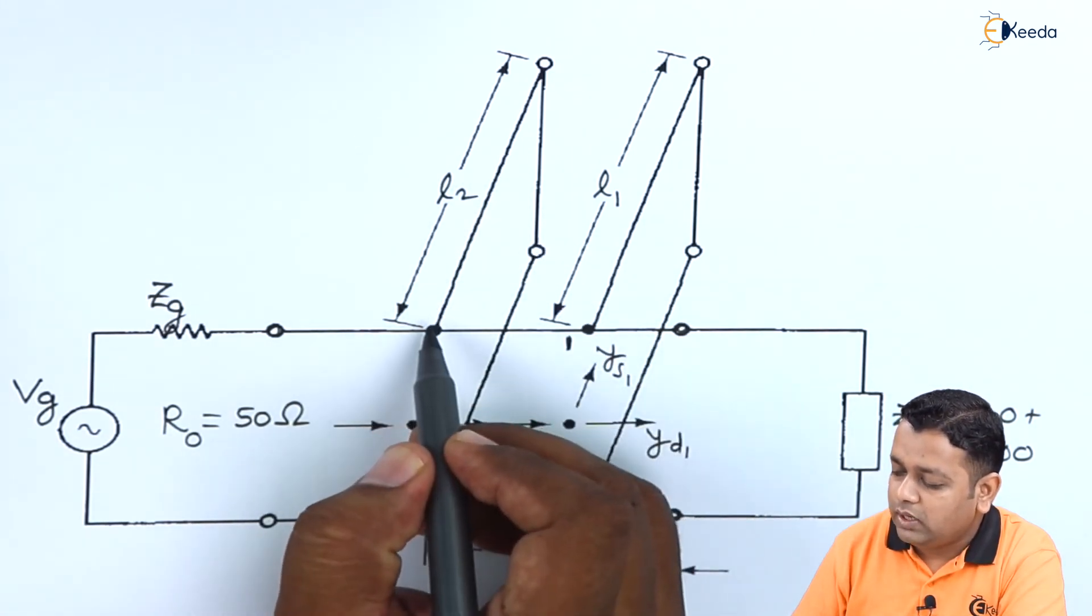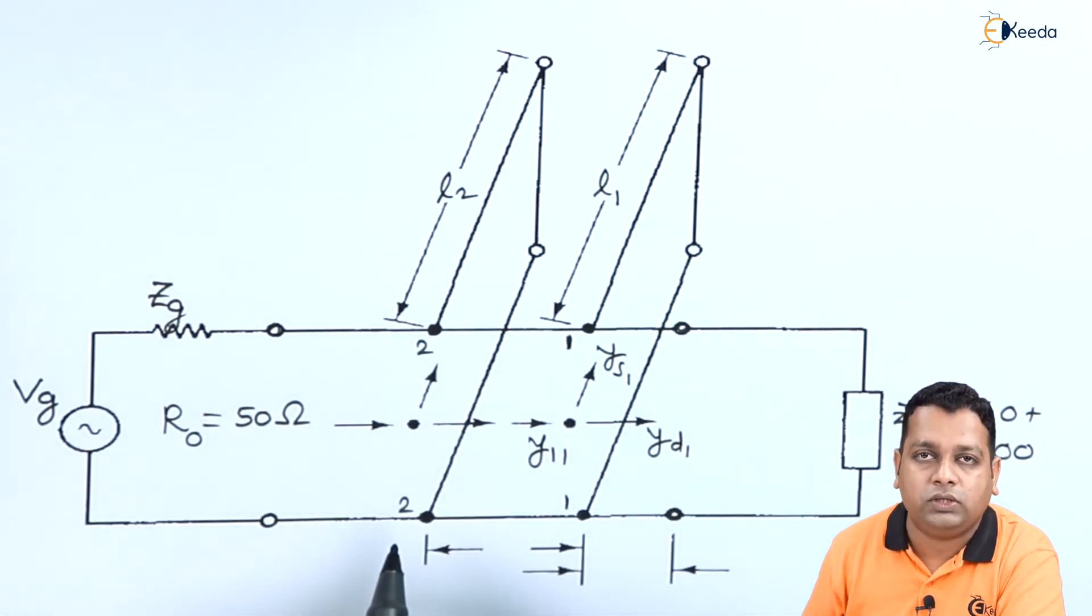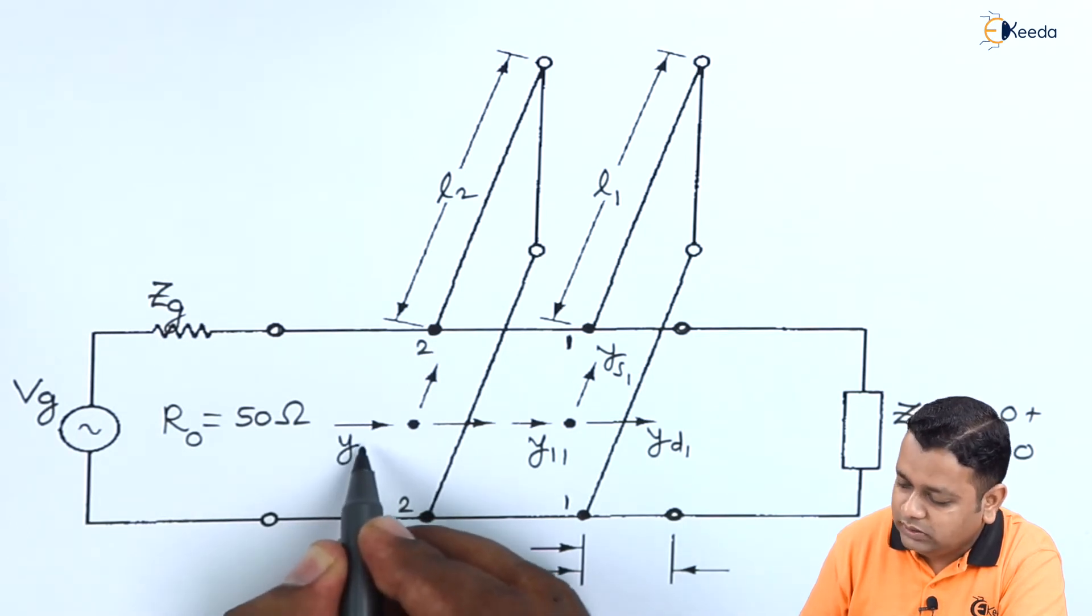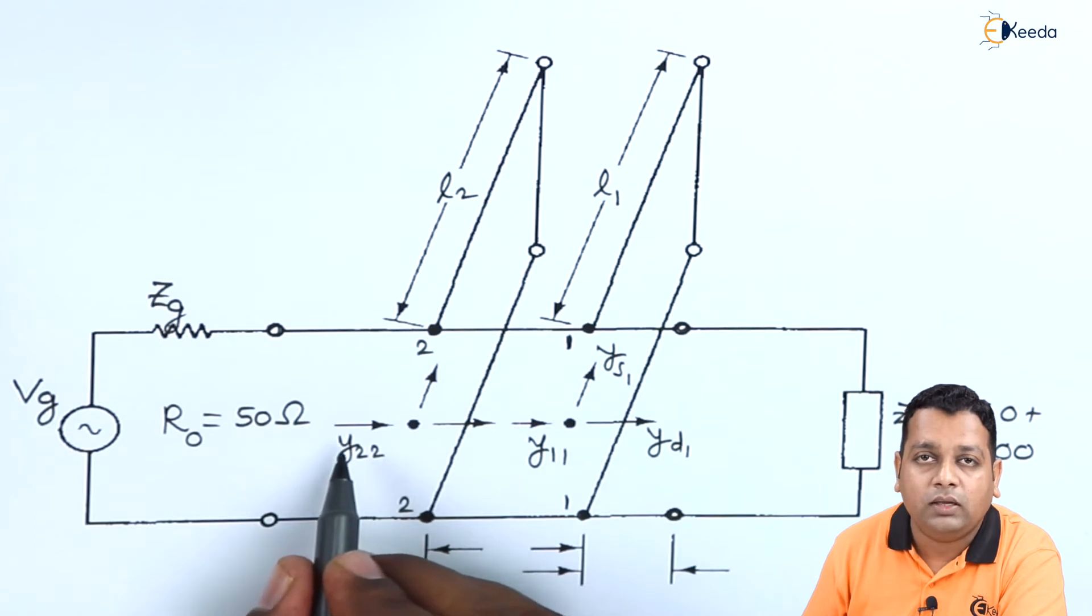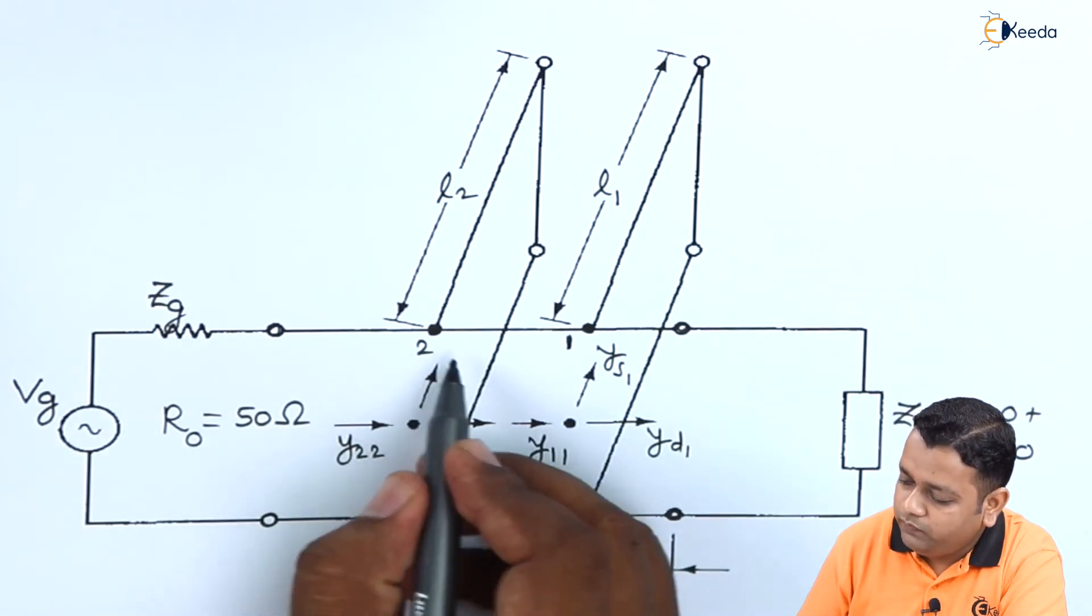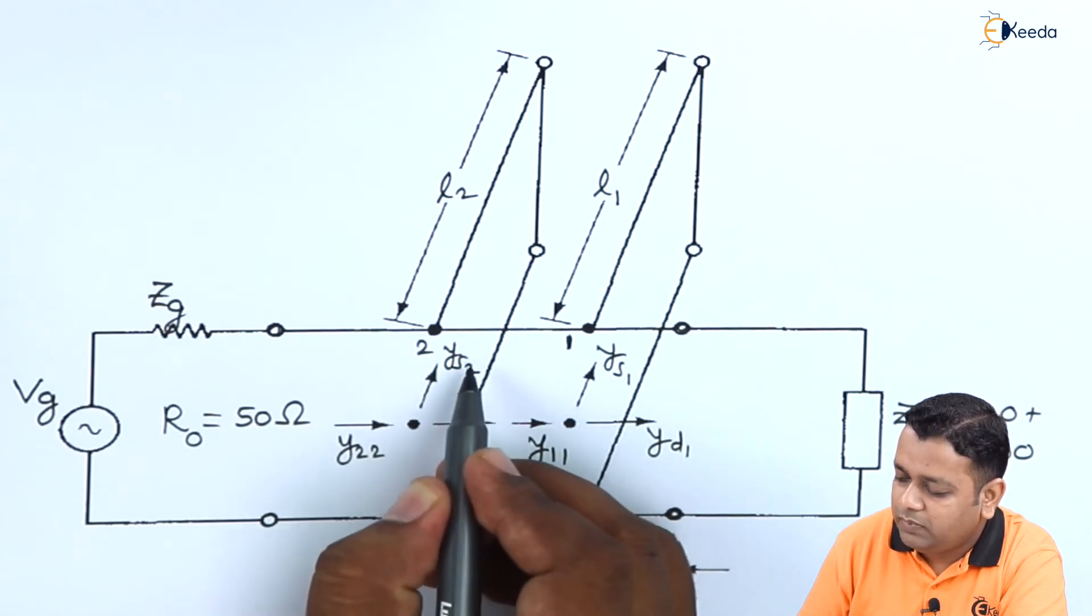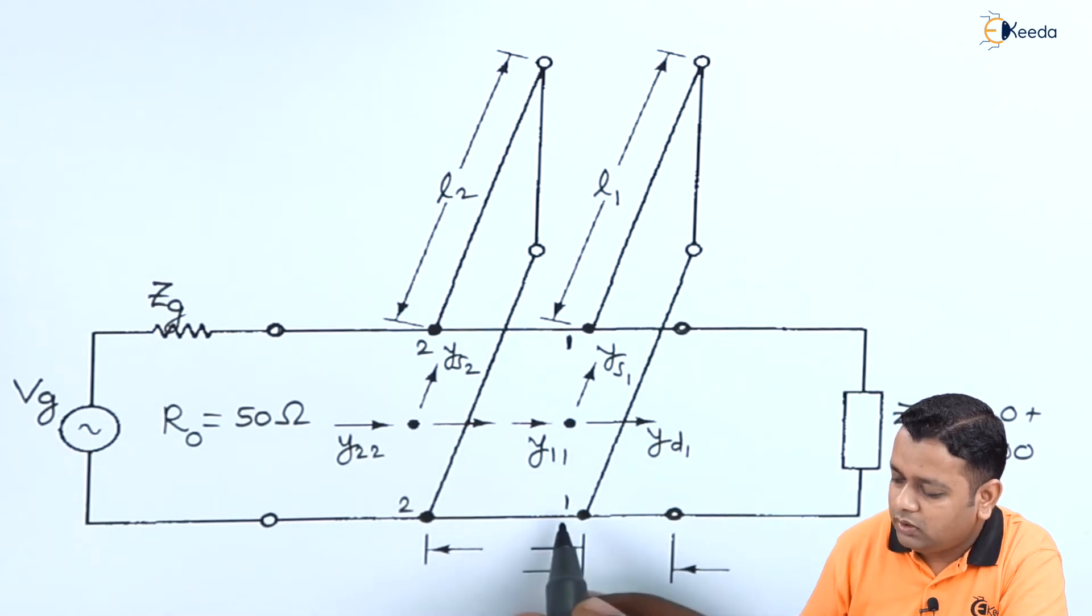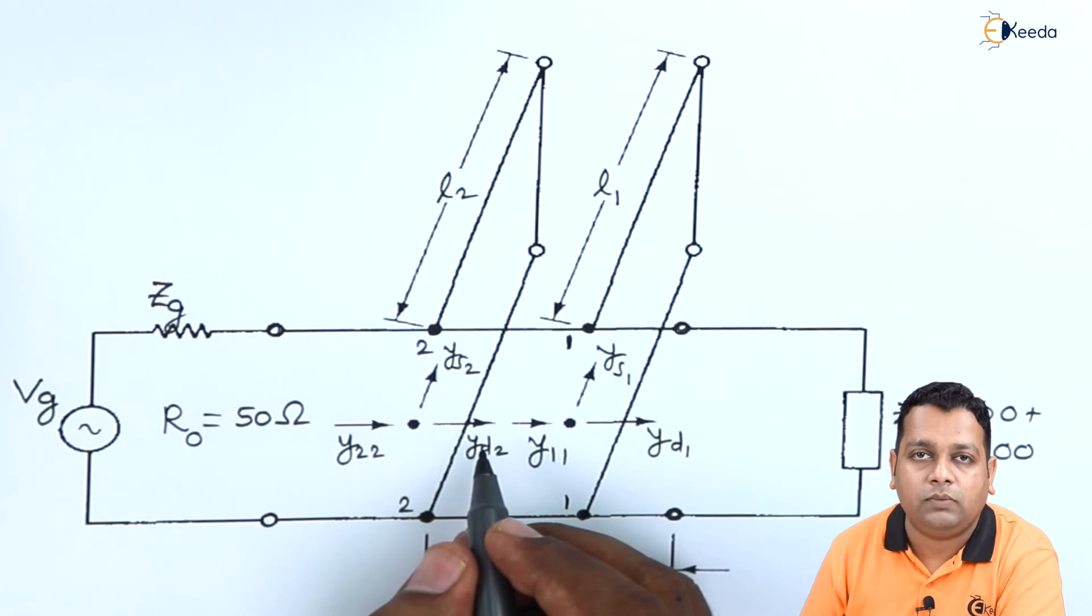Now L1 is equal to L2 here. The position of the second stub we have represented by the points 2-dash-2 here. The corresponding normalized admittance at the point Y2-2 can be denoted by Y suffix 2-2, resolved into the direction of stub, so it will be Y suffix s2. Here the direction of the transmission line can be Y suffix d2 represented here.